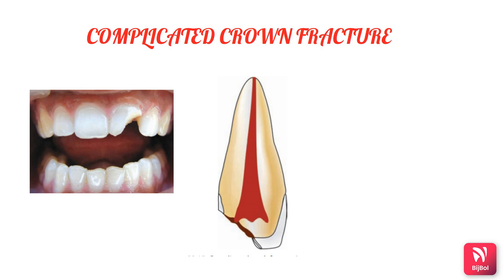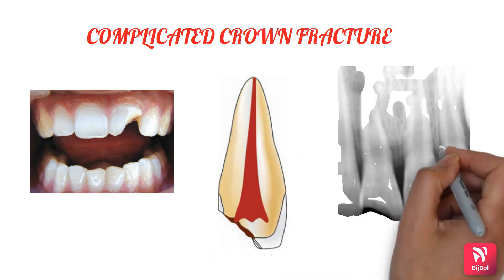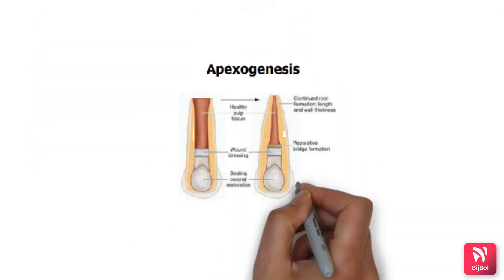The extent of the fracture helps determine the pulp treatment and restorative needs. Diagnosis is made through pulp testing and radiographs. Factors such as the extent of the fracture and the stage of root maturation are important for designing the treatment plan.